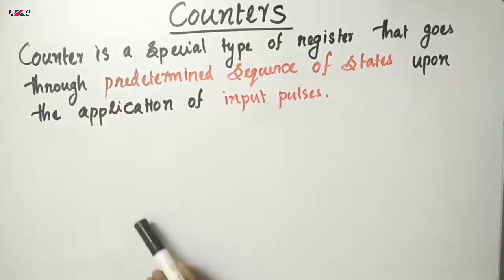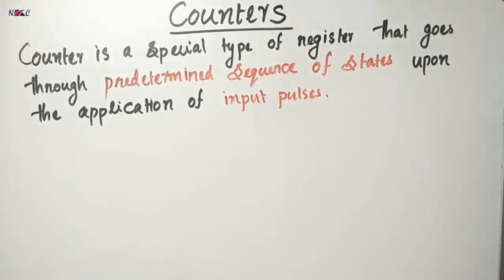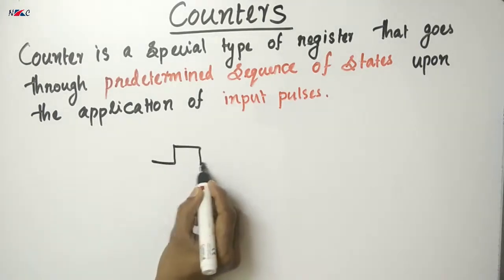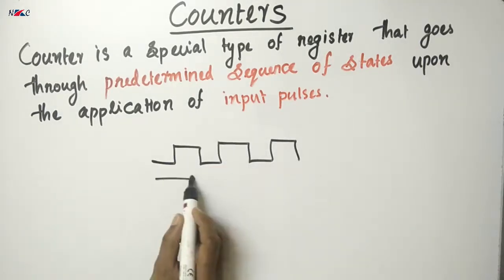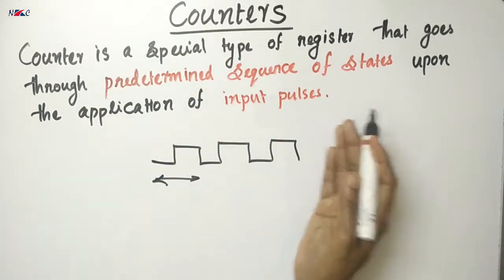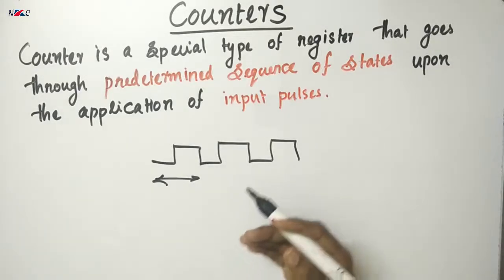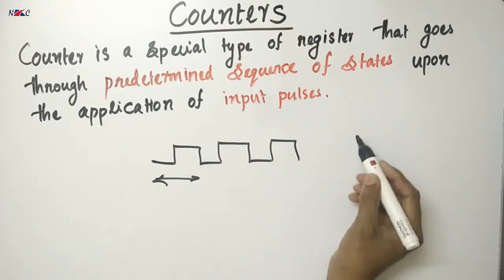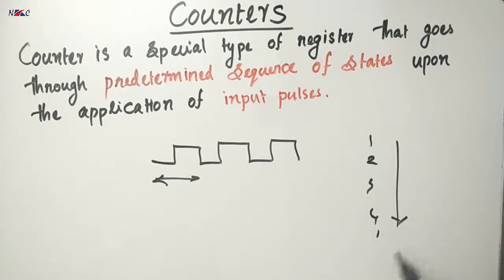A counter is a circuit which is used to count a sequence — one, two, three, four. Any sequence is counted by a counter circuit.